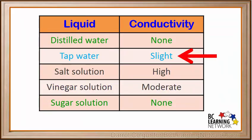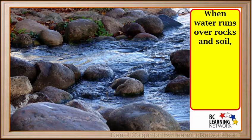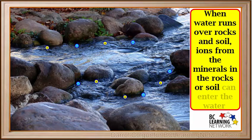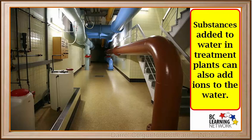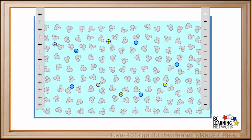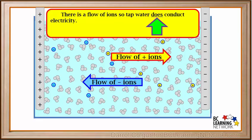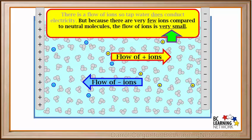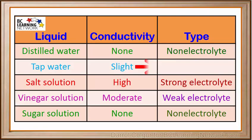Now we'll look at tap water. We identified tap water as having very slight conductivity. We can explain this by thinking about where tap water comes from. When water runs over rocks and soil, ions from the minerals can enter and become dissolved in the water. Substances added in water treatment plants can also add ions. So tap water consists mainly of neutral molecules and a few ions. Positive ions move toward the negative probe, and negative ions move toward the positive probe. There's a flow of ions, so tap water does conduct some electricity. But because there are very, very few ions, the flow is very small — therefore tap water is only a slight conductor, and we call it a very weak electrolyte.